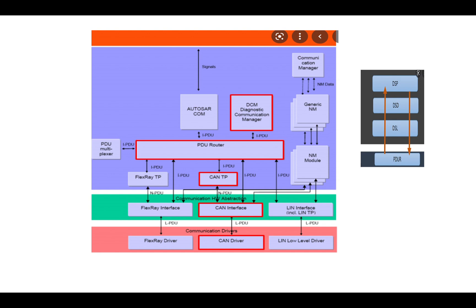Say for example, if we take the underlying protocol as CAN, then whenever there is a diagnostic request from CANoe — from the tester — it comes to the CAN driver, to the CAN interface, then to the CANTP, then to PDOR, then to DCM, and it is routed to either DEM or via RTE to the application component. As a response, it goes the other way. If the message is more than eight bytes, only then CANTP is involved for multi-frame communication; otherwise it goes directly to the CAN interface and the CAN driver.